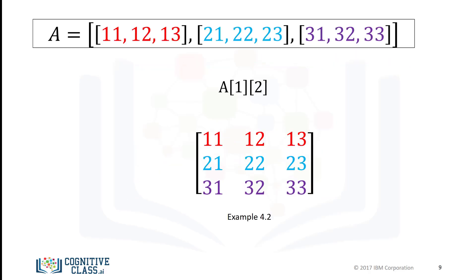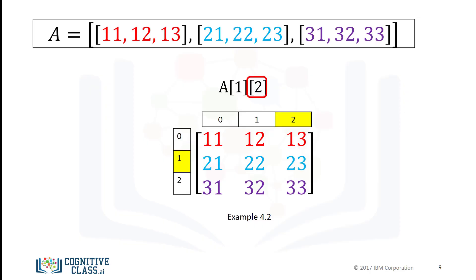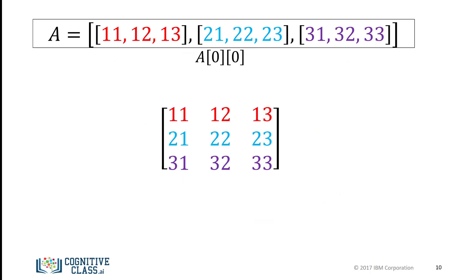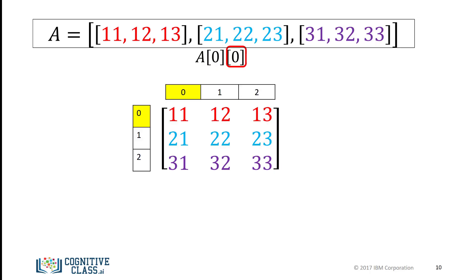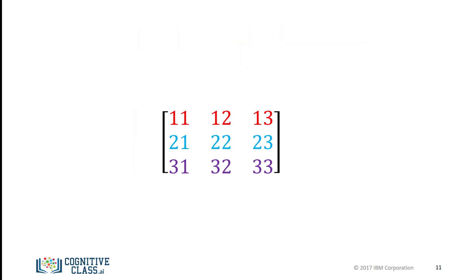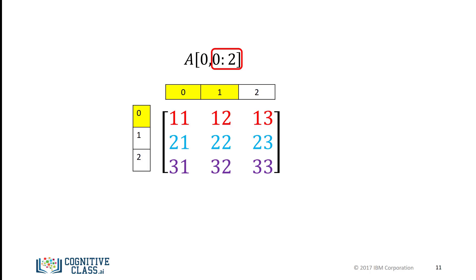Consider the following syntax. This index corresponds to the second row, and this index to the third column. The value is 23. Consider this example: this index corresponds to the first row, and the second index corresponds to the first column, giving a value of 11. We can also use slicing in NumPy arrays. The first index corresponds to the first row, and the second index accesses the first two columns.